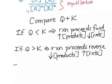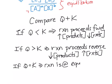And lastly, if Q equals K, it means the reaction is at equilibrium and it won't move. This is useful if you're given the concentrations of both reactants and products at the beginning of a question, because you need to use Q to determine if the reaction is going to move forward — increasing product concentration while decreasing reactant concentration — or move backwards and decrease the concentration of products while increasing the concentration of reactants.